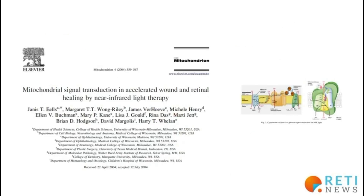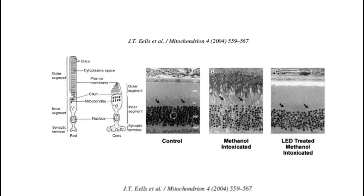Another study by Janice Eels et al. presents the concept of the mitochondrion as the main organelle containing cytochrome oxidase, shown in the figure on the right. By stimulating cytochrome oxidase, various cellular effects are produced that improve healing and help the retina recover from damage. This is illustrated by a model of retinal degeneration induced by methanol intoxication in mice, where histology shows the control, the degeneration after methanol intoxication, and an improvement with photobiomodulation treatment.